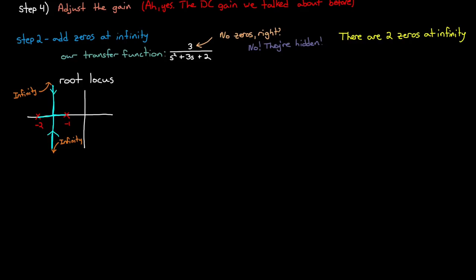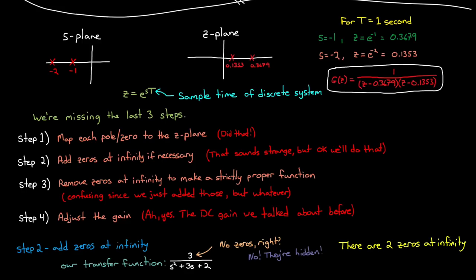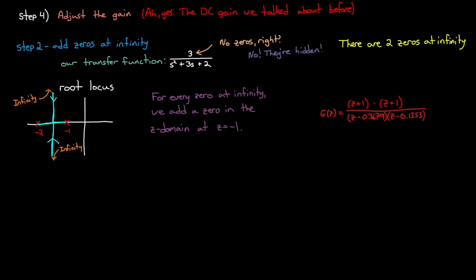The way we account for them is by shifting them down to the Nyquist frequency, which means putting a zero at z equals minus one for every infinity zero in the s-domain. So for us, this transfer function has two zeros at infinity, and therefore our discrete transfer function will include two zeros at z equals minus one. Well, that seems easy enough. So let's move on to step three, create a strictly proper transfer function.